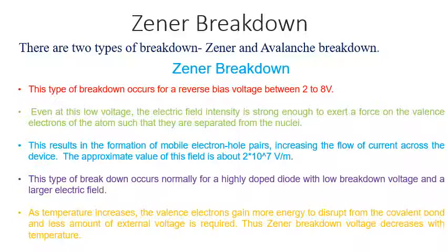Zener breakdown: this type of breakdown occurs when the reverse biased voltage is between 2 to 8V. Even at this low voltage, this breakdown occurs through an electric field intensity which is strong enough to break the covalent bonds. This results in the formation of mobile electron-hole pairs, which increases the flow of current across the device. This type of breakdown occurs normally for a highly doped diode — the diode is highly doped and its breakdown voltage is less, that is between 2 to 8V, and it exerts a large electric field. This breakdown is majorly due to breaking of covalent bonds due to electric field.